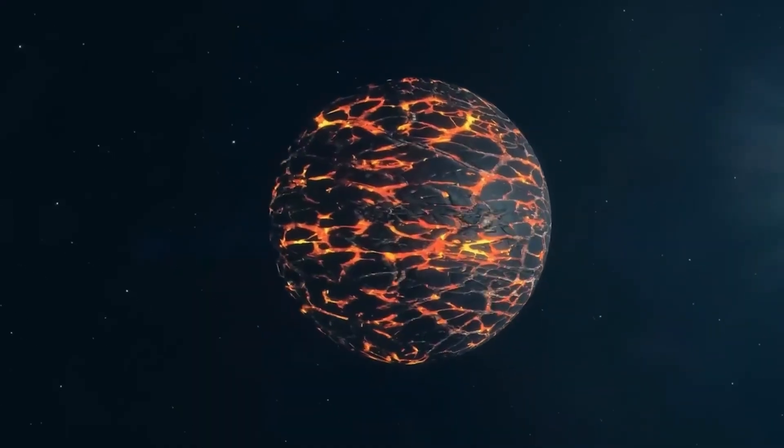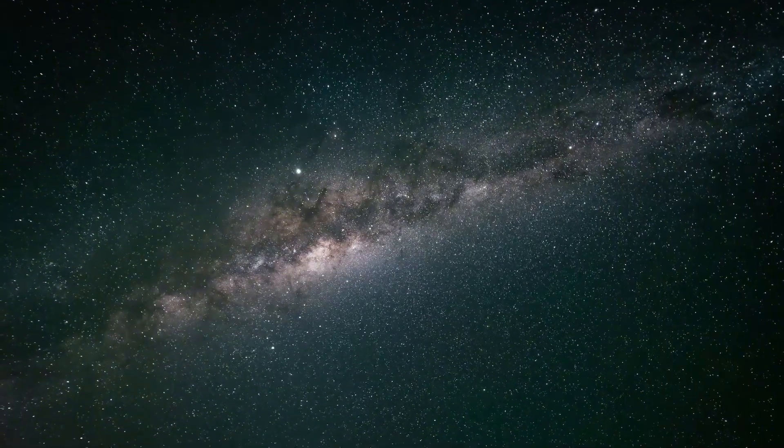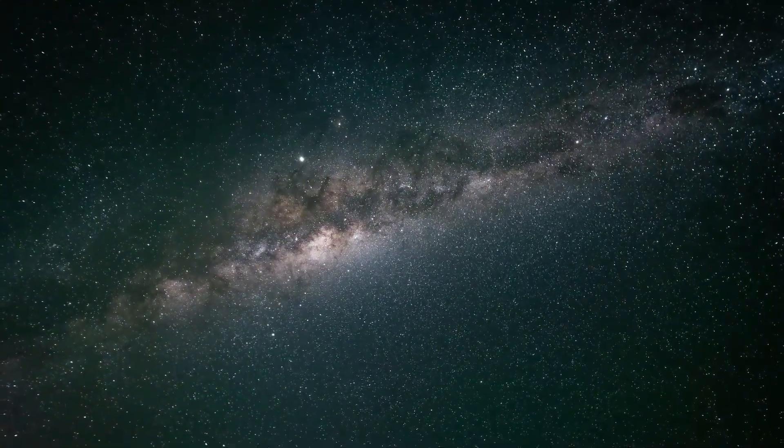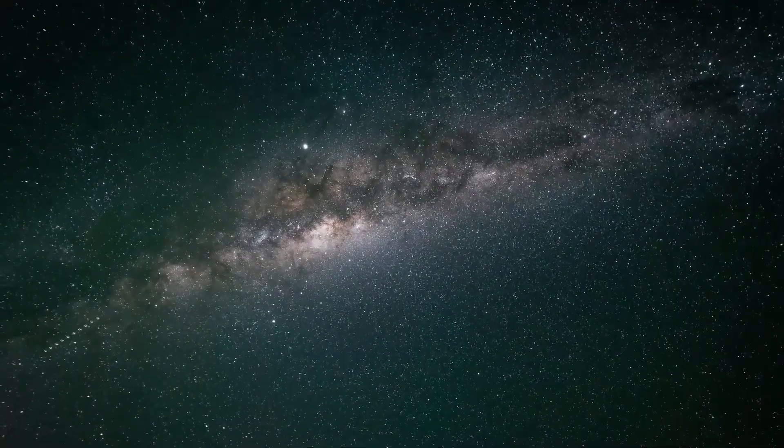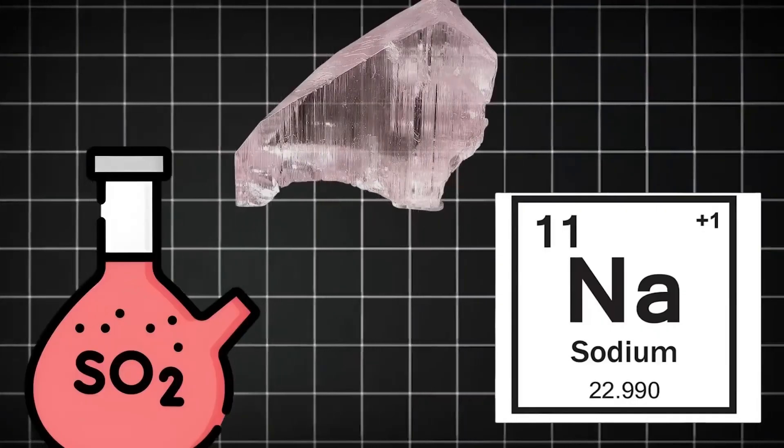While Webb has been uncovering the deep cosmos, it's also been turning its attention to the shadowy corners of our own solar system. One of its recent focal points, the outer moons of Uranus and Neptune, satellites long believed to be dormant, cold rocks with little scientific interest.